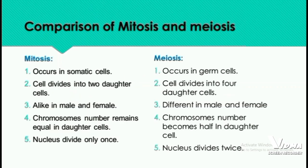Now a comparison of mitosis and meiosis — remember 4 to 5 points for subjective questions. Mitosis occurs in somatic cells, while meiosis occurs in germ cells concerned with reproduction. In mitosis, a cell divides into two daughter cells; in meiosis, it divides into four. Mitosis is the same in males and females, while meiosis differs. In mitosis, the chromosome number remains equal in daughter cells; in meiosis, the chromosome number is halved. In mitosis, the nucleus divides once; in meiosis, the nucleus divides twice.